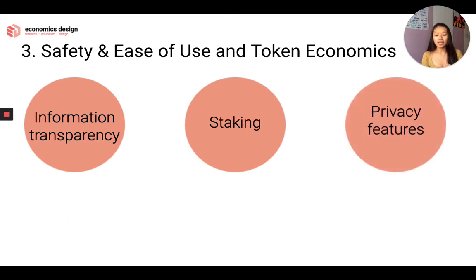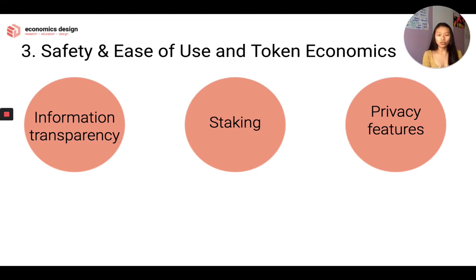Safety features: you have privacy mechanisms like zero-knowledge proofs (ZKP) — Corda uses that, Zcoin uses that, Zcash uses that, and a lot of privacy coins. You also have ring signatures like Monero. These are different types of privacy features that increase safety in the ecosystem.